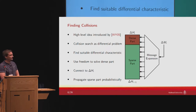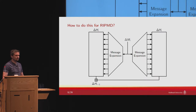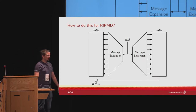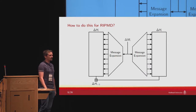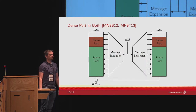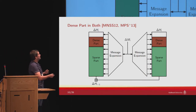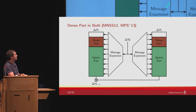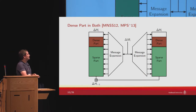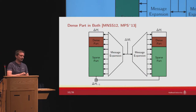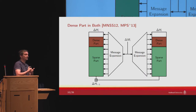What do we do for RIPE MD 160? Since the compression function is more complex, one option is to place a dense part in both branches of RIPE MD. This has already been done by several papers, but the problem is that we have to use the freedom in the message to solve the dense part in two branches. The available degrees of freedom are consumed very rapidly, and typically if we follow this framework, we can only do semi-free-start collisions.